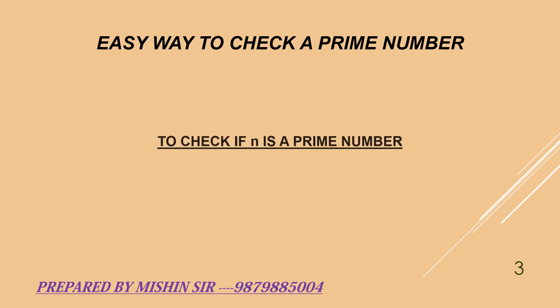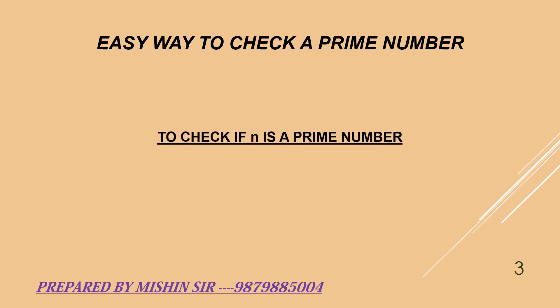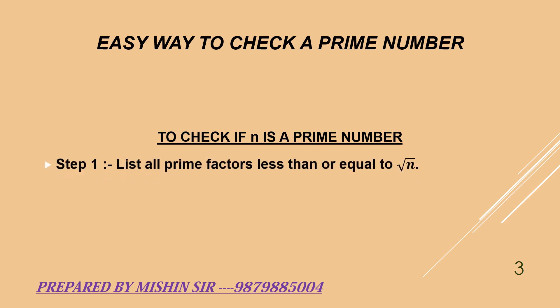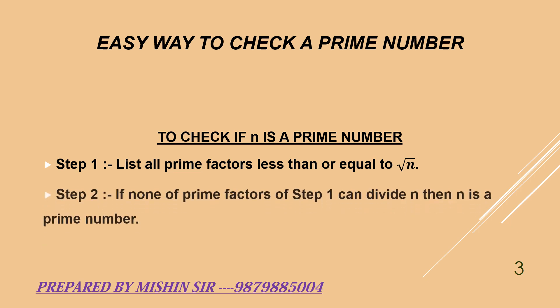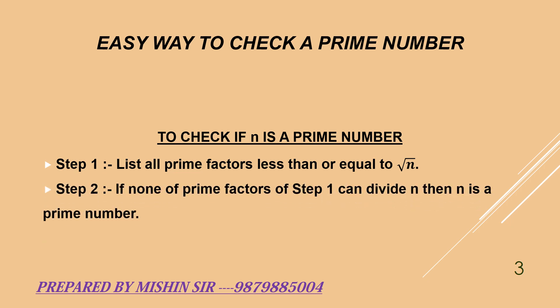To check if n is a prime number, there are two steps involved. Step 1: list all prime factors less than or equal to the square root of n. Step 2: if none of the prime factors from Step 1 can divide n, then n is a prime number. Now we check this method through examples.